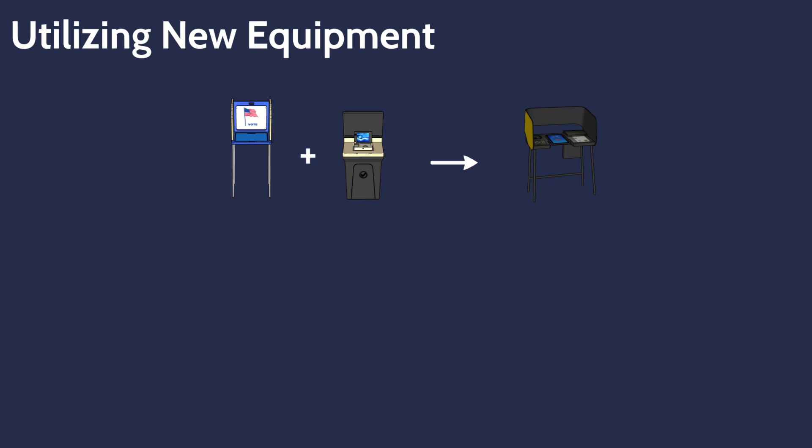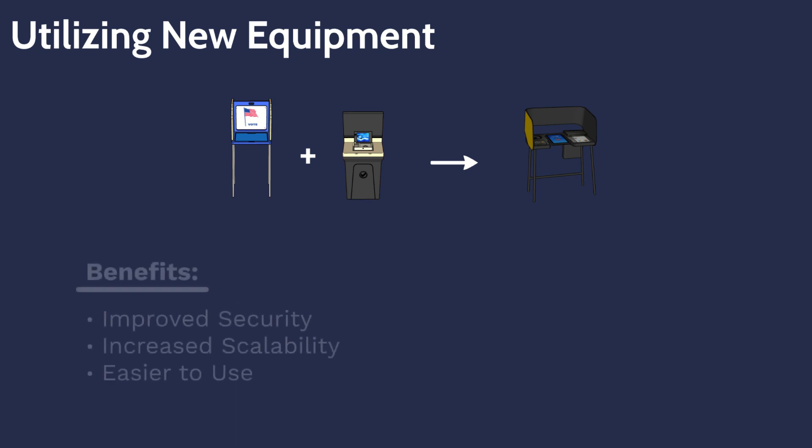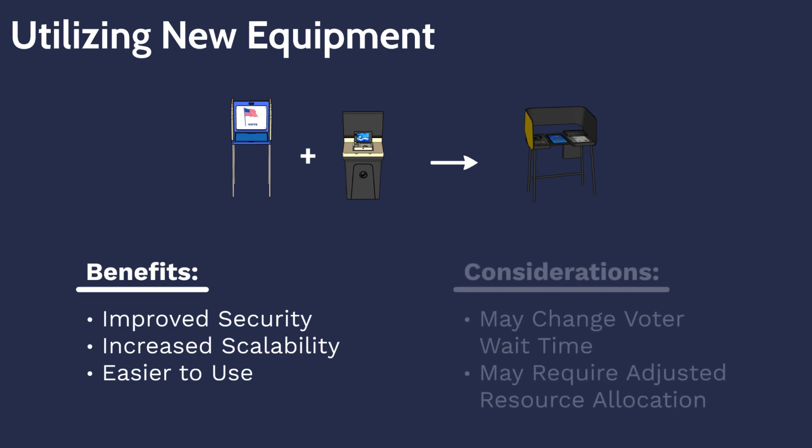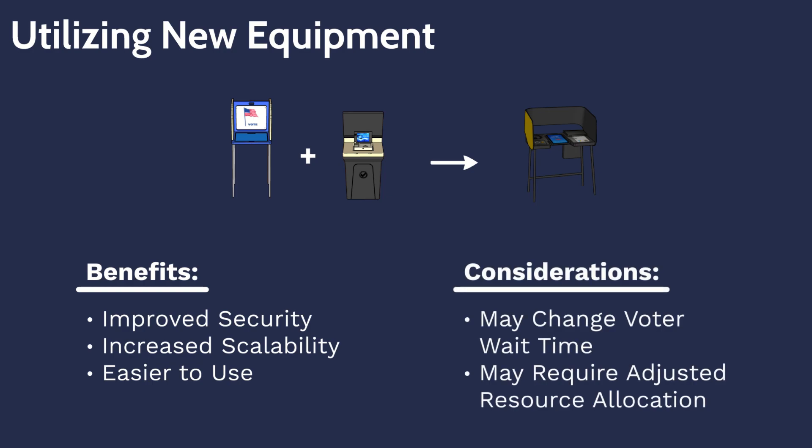Through these results, we demonstrate the need to reconsider voting equipment allocations when voting processes change. While transitioning from one voting process to another may have desired benefits such as security, scalability, or ease of use, the effects on voter wait times and resource allocation must also be considered.